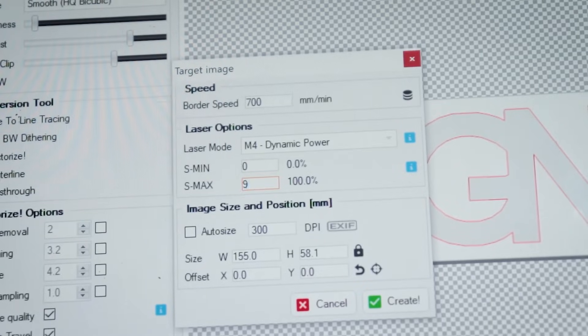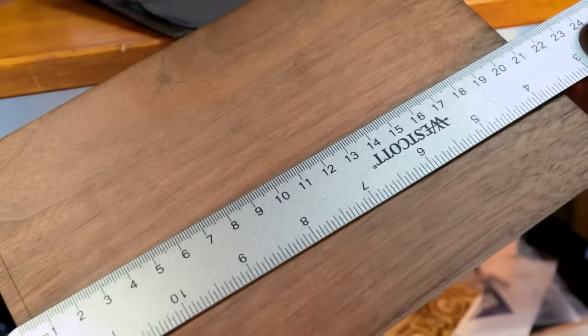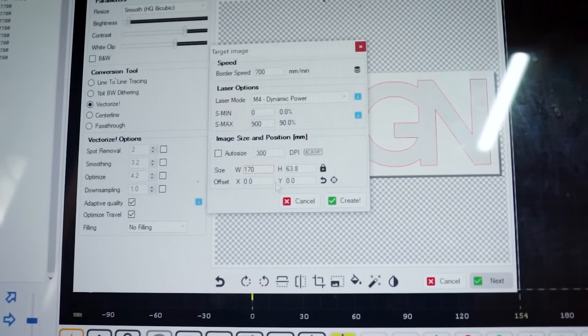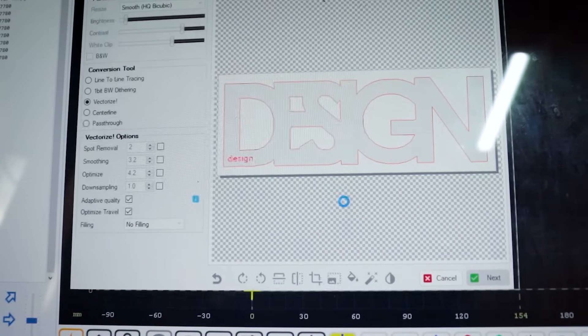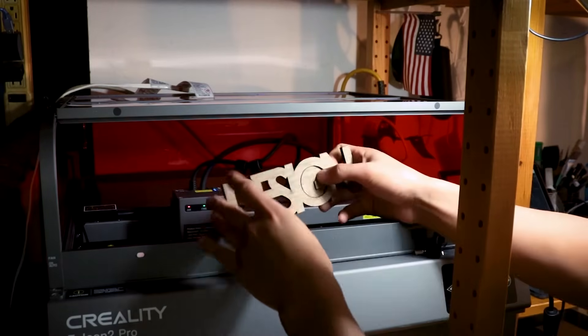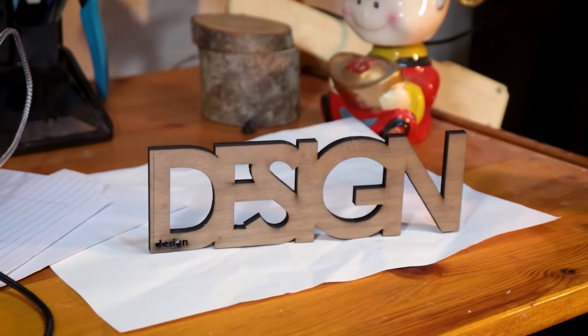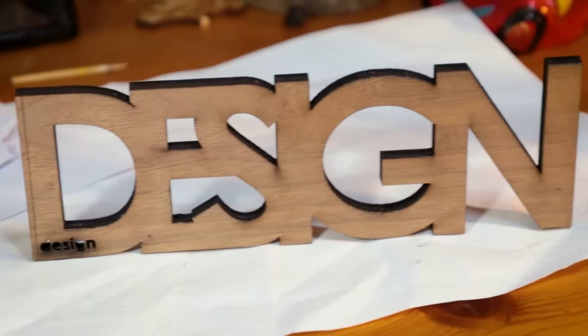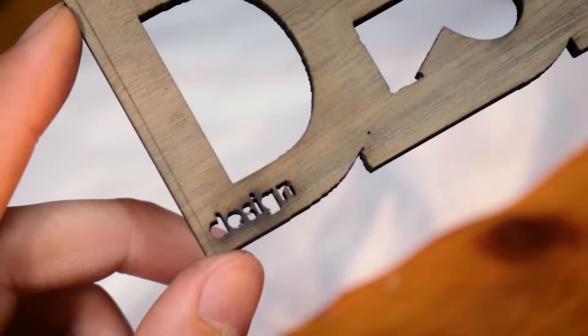Measure your design on the wood. Input the size. And that's basically all the settings you need to know for a beginner. Once you click start, the laser will cut. And now you have your first laser engraving project done. Congratulations. The tutorial is over. Let's go home now.